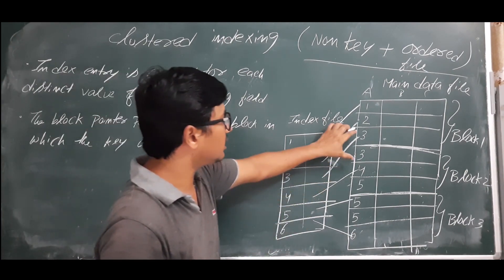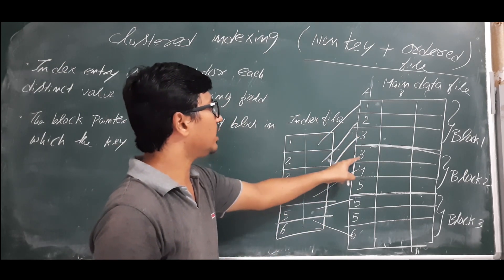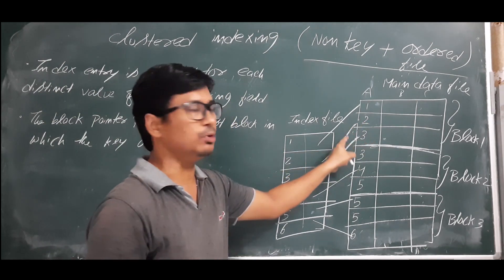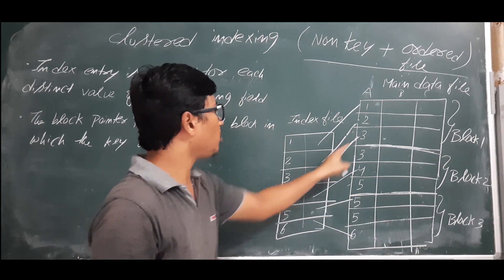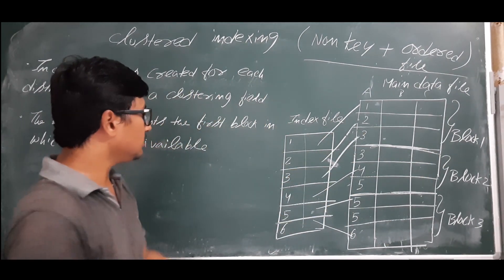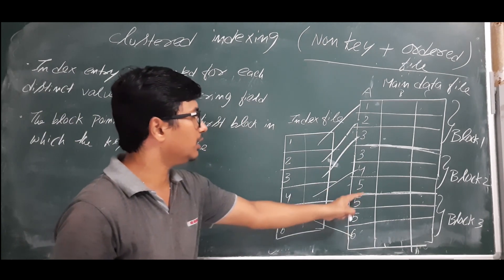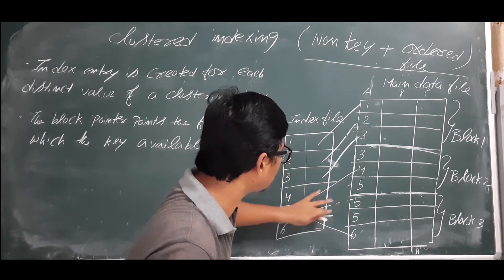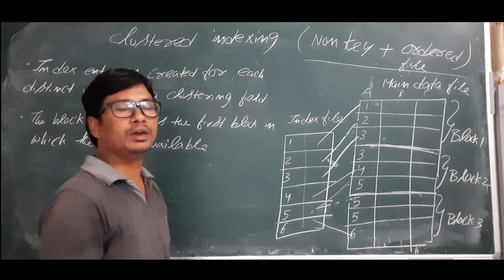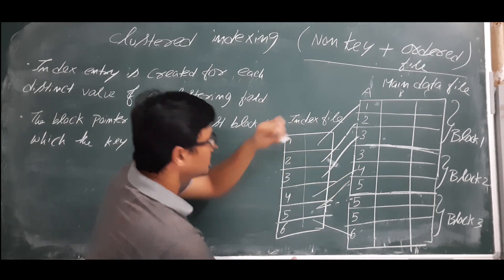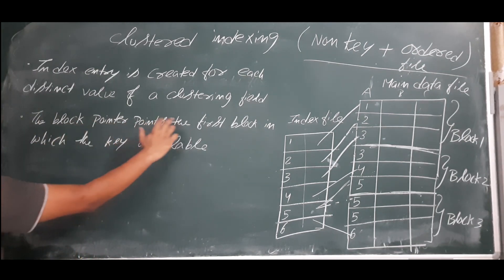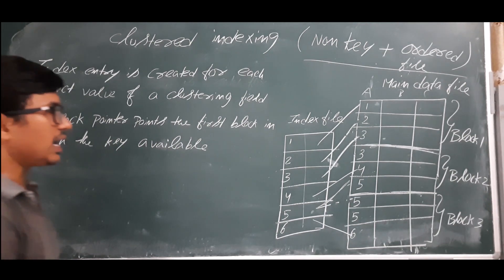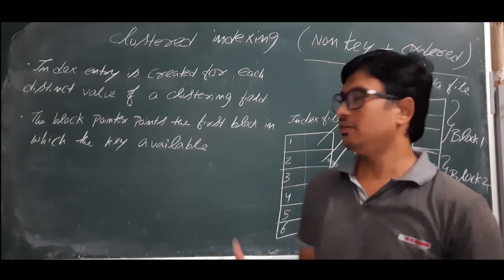The block pointer points to the first block in which the key is available. For example, value 3 appears in block one and block two, but since it first appears in block one, the block pointer points to block one. Similarly, value 5 is in block two and block three, but it first appears in block two, so the block pointer points to block two.